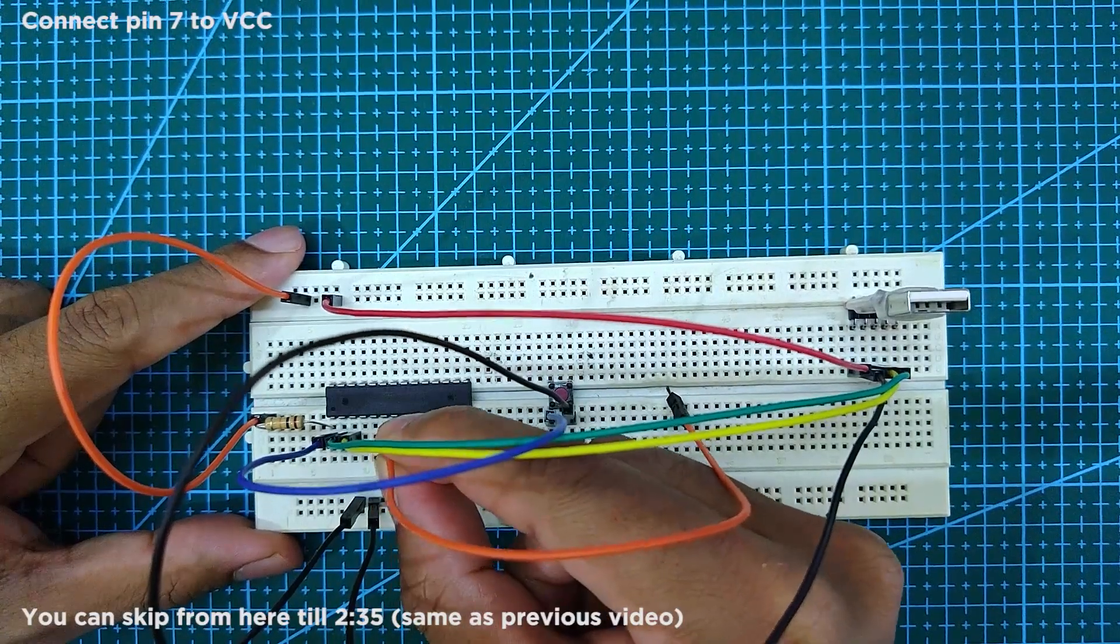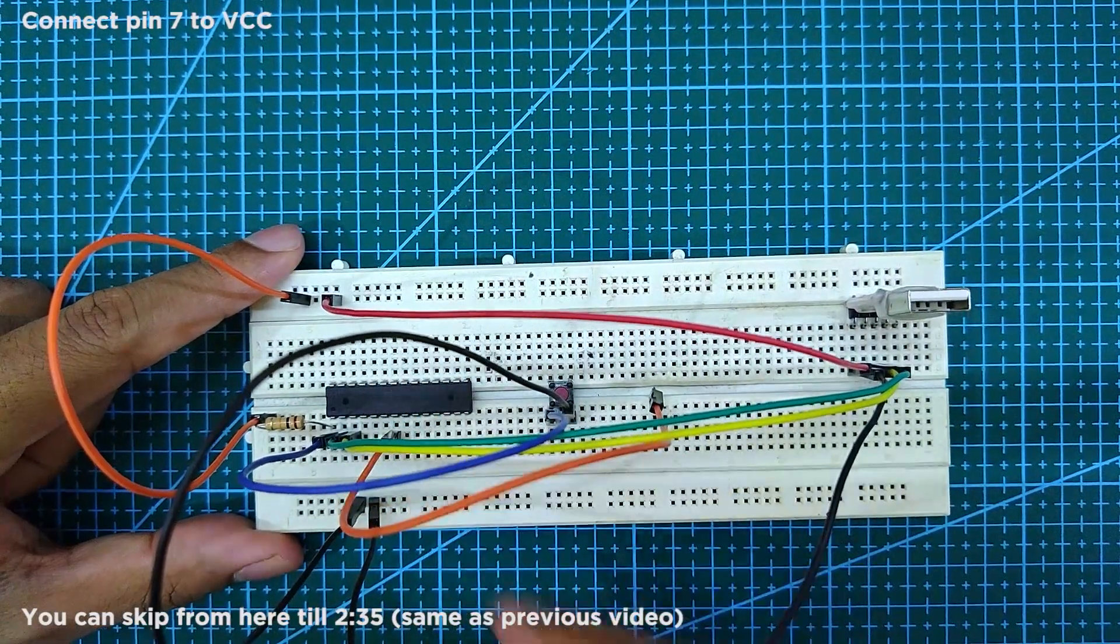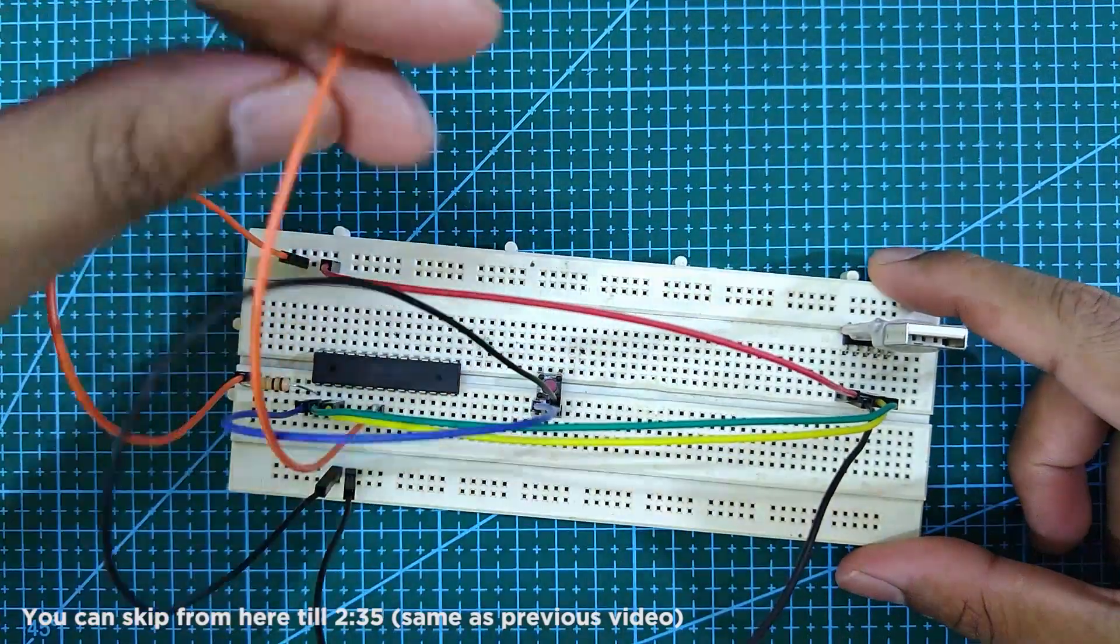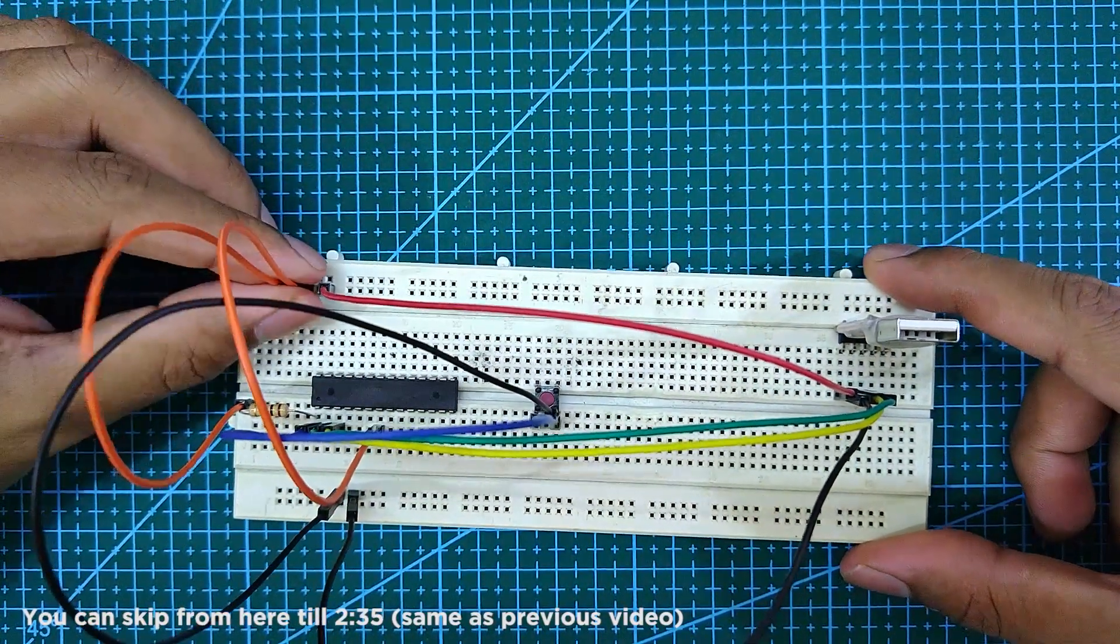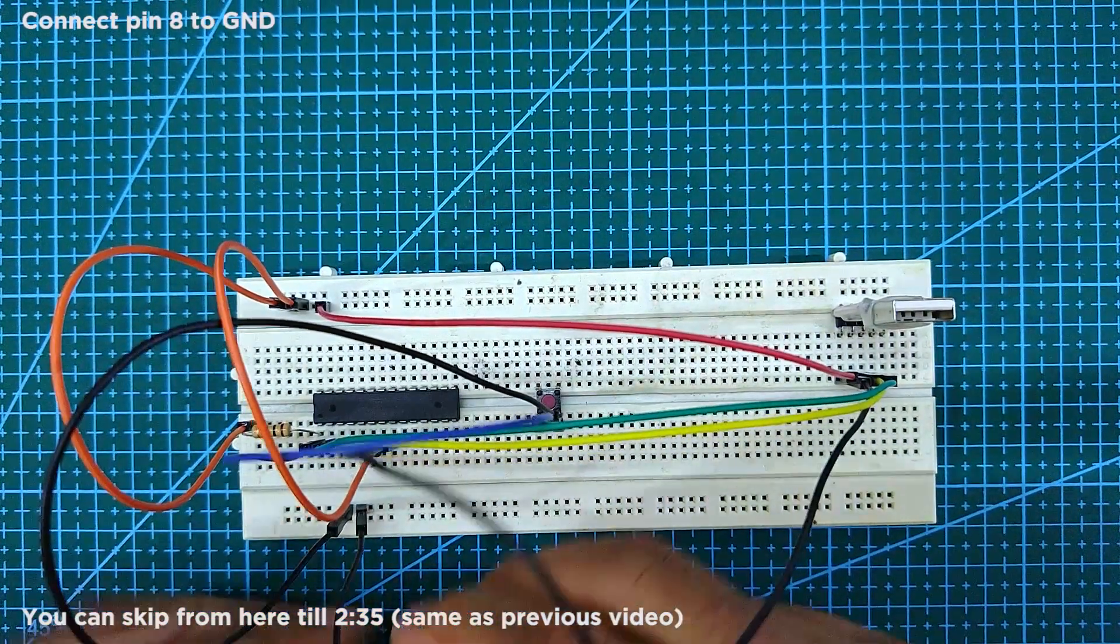Next, connect pin 7 to VCC and pin 8 to ground.